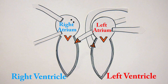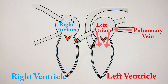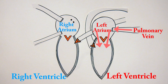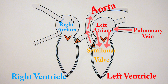That moves us on to the systemic circuit, which takes oxygenated blood and sends it to the rest of the body. The pulmonary vein brings blood into the left atrium. The left atrium contracts and sends blood into the left ventricle through the atrioventricular valve on the left side. That valve then closes to prevent backflow. Due to the increase in pressure in the left ventricle, the left semilunar valve opens and allows blood to enter the aorta — the main artery of the heart — and go out into the rest of the body.